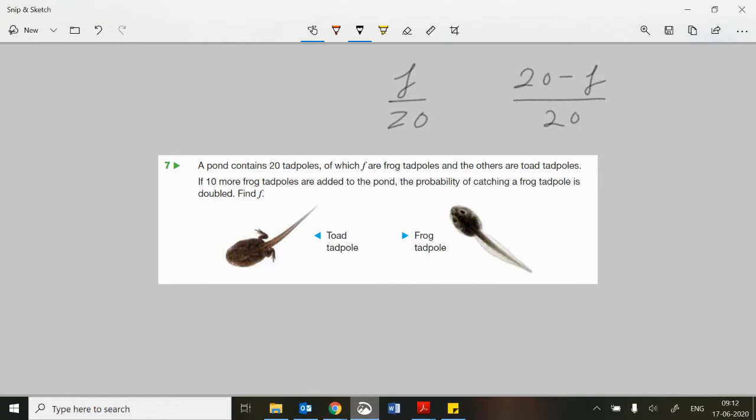Now, it says if 10 more frog tadpoles are added to the pond, the probability of catching a frog tadpole is doubled. Okay, so you could obviously do this by some trial and error. But let's try and do it by setting up the structure of the mathematics.